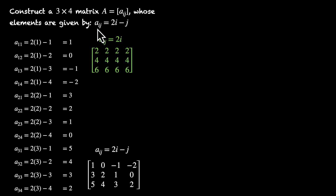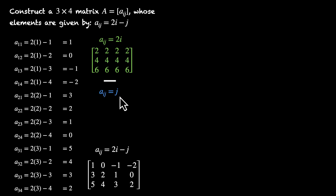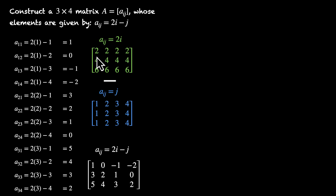And what if the formula was just j? Then the element only depends on the column number. The first column would be all 1s, second column all 2s, third column all 3s, and fourth column all 4s. Now if you subtract corresponding elements of the j-matrix from the 2i-matrix, you get the 2i minus j matrix. Let's check: 2 minus 1 = 1, 2 minus 2 = 0, 2 minus 3 = minus 1, 2 minus 4 = minus 2. This works.